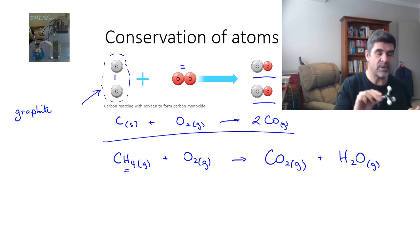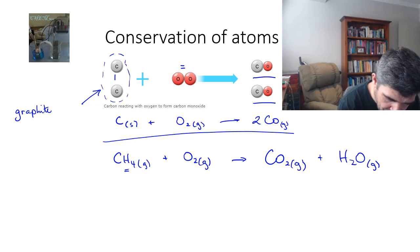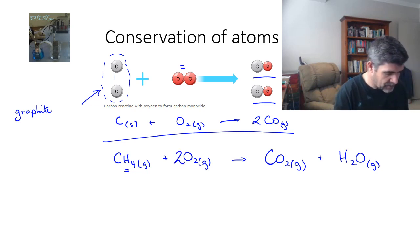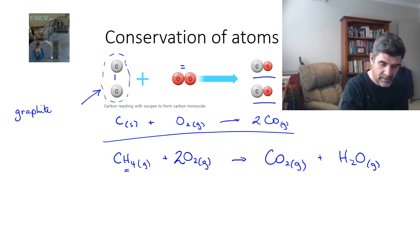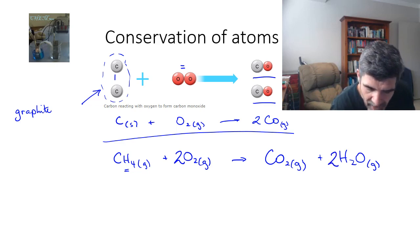So we start with one methane. We need two oxygen molecules to give us one carbon dioxide, but two water molecules. That means I can write the equation as CH4 plus 2O2 gives CO2 plus 2H2O.